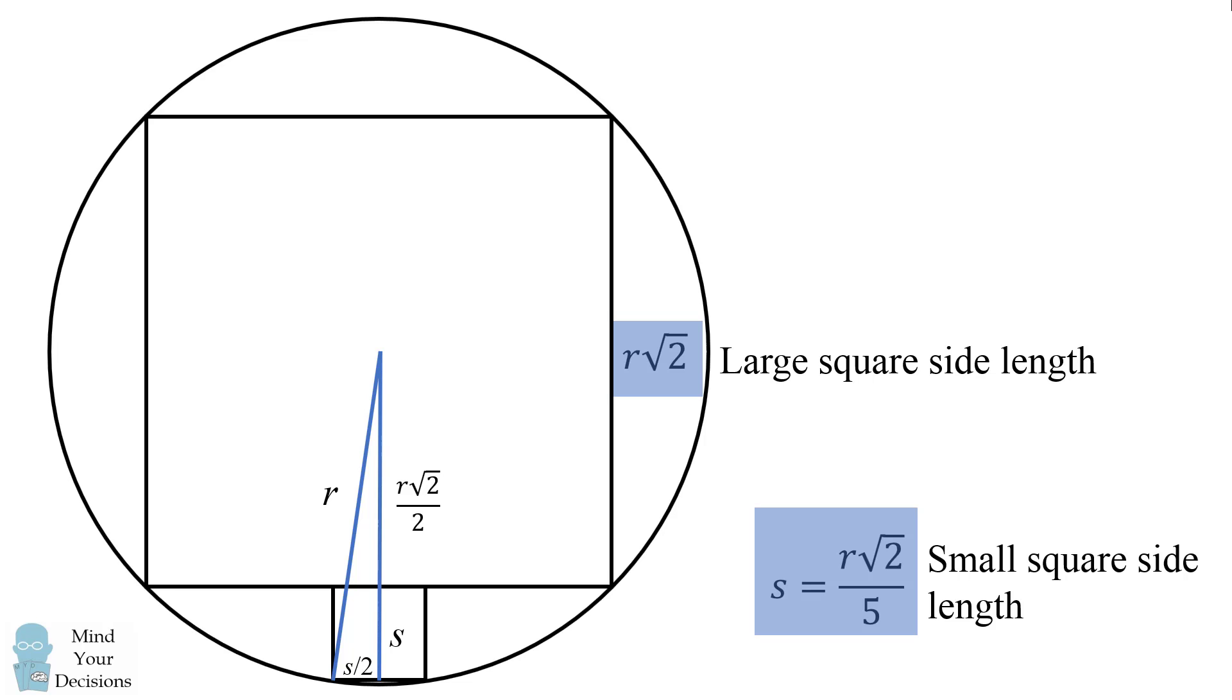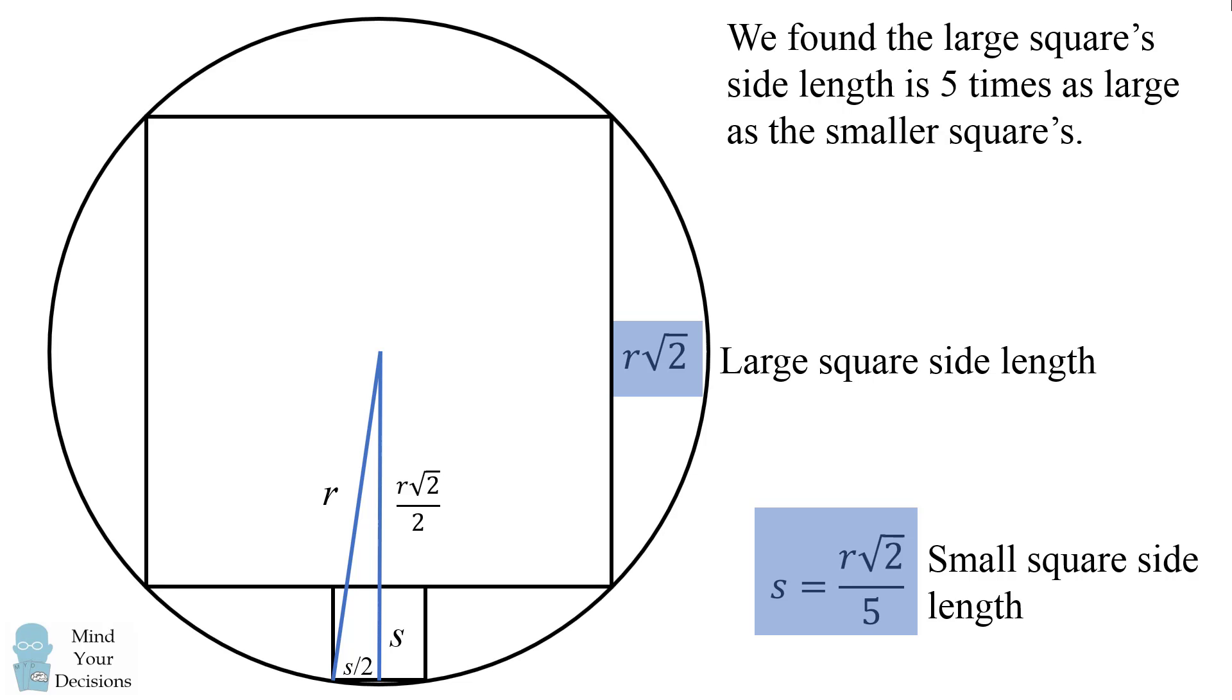If you compare these two numbers, we'll see that the large square's side length is 5 times as large as the smaller square's side length.